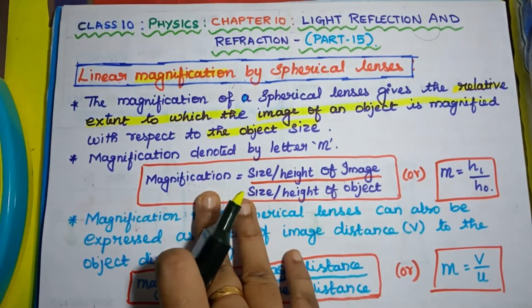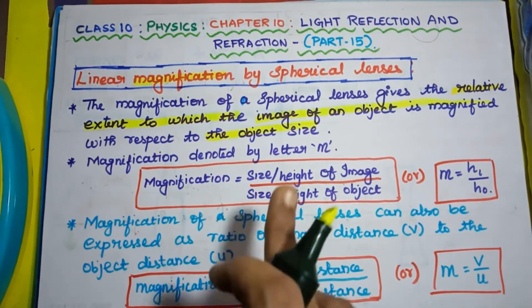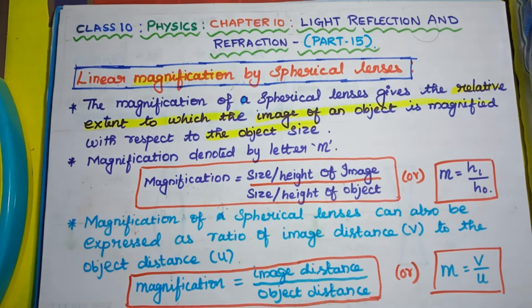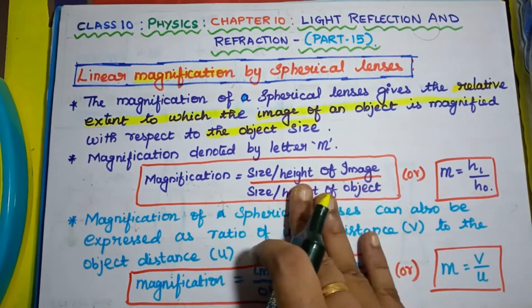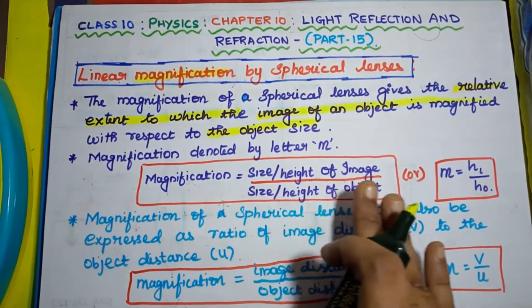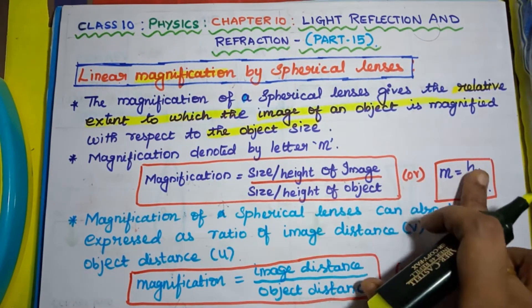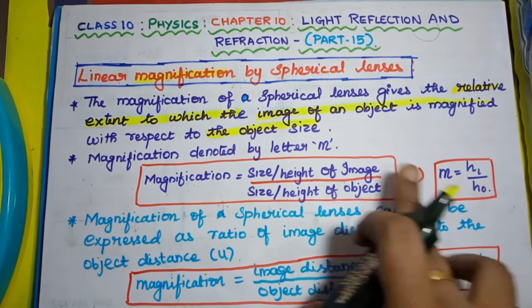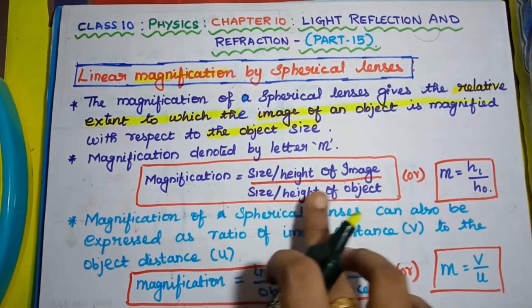Based on this concept, magnification of spherical lenses is expressed in ratios. Before seeing this expression, you must know that the size of the image represents the height of the image, and the size of the object represents the height of the object. So magnification is equal to the height of the image over the height of the object. This ratio is expressed in the formula: M = H1 / H0, where M represents magnification, H1 represents the height of the image, and H0 represents the height of the object.